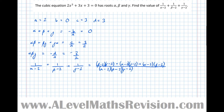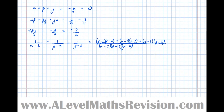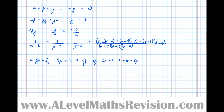Let's multiply out the top and the bottom now and see what happens. Expanding the numerator: (beta·gamma - 2·gamma - 2·beta + 4) + (alpha·gamma - 2·gamma - 2·alpha + 4) + (alpha·beta - 2·beta - 2·alpha + 4).